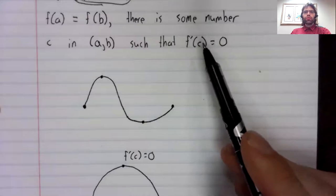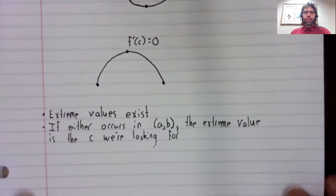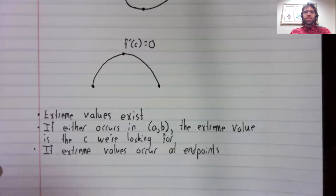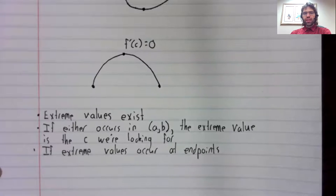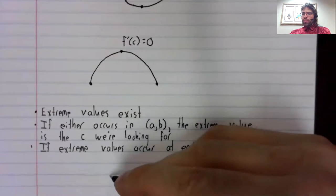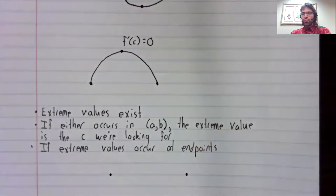A value where the derivative is zero. The only other possible case is if the extreme values occur at the end points. But remember that the function has the same value at these end points.